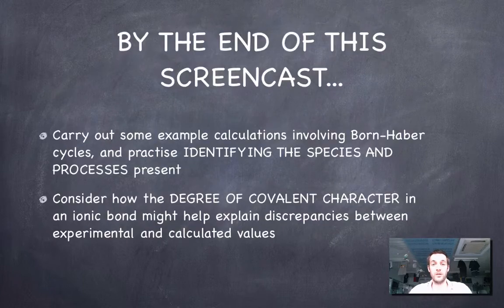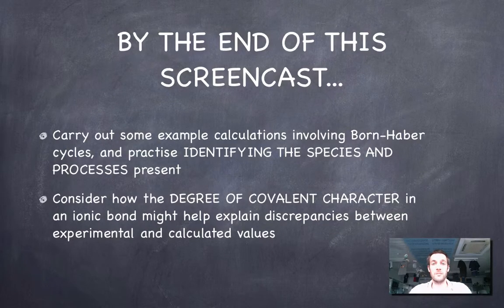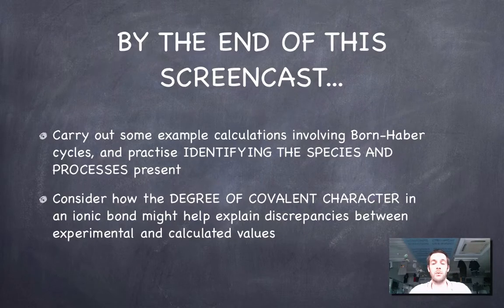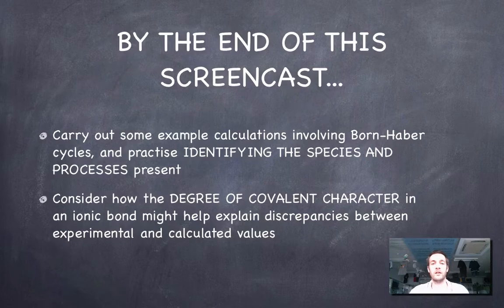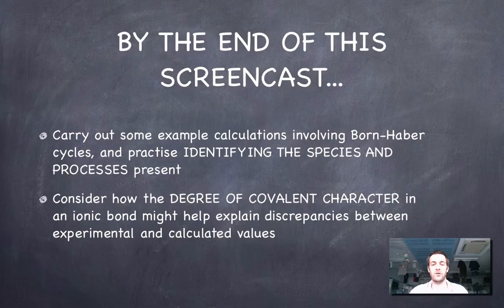So, the sort of things we're going to review are identifying the species and processes that are taking place at each stage of a Born-Haber cycle, and we're going to carry out a sample calculation, and we're going to see also, towards the end of this film, how the degree of covalent character in an ionic bond might help explain any differences that we observe between an experimental and a calculated value for a lattice enthalpy.